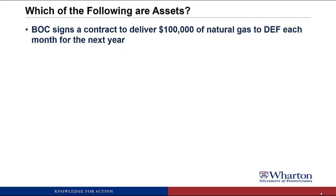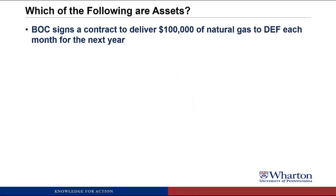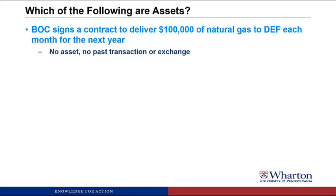Next, BOC signs a contract to deliver $100,000 of natural gas to DEF each month for the next year. This one will not be an asset because there's been no past transaction or exchange. Every exchange of cash, goods, or services is going to happen sometime in the future. Nothing has been exchanged yet, so there can't be an asset for it.